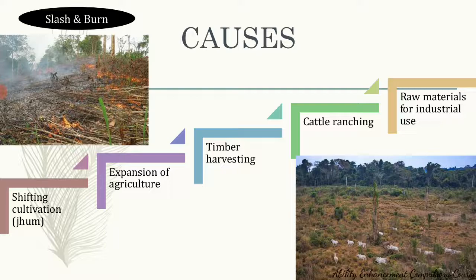In between one jhum cycle, the farmer would have cut down several different forest areas for cultivation. That is why this is a major contributor to deforestation — several parts of the forest are being cut down and the time required for them to regain fertility is quite long. We don't have that much forest area in our current scenario where the population is high and demand is more. This type of cultivation is also called shifting cultivation.